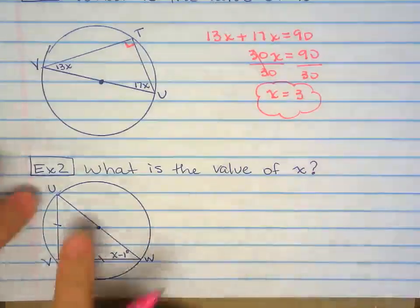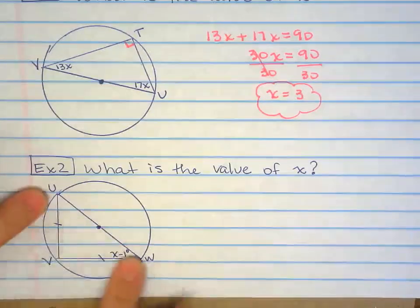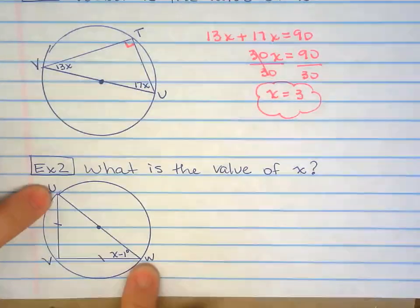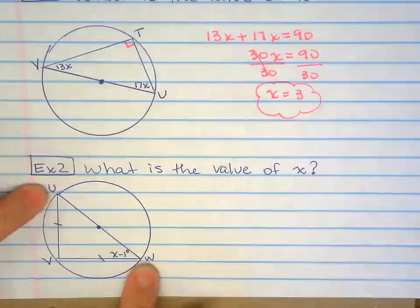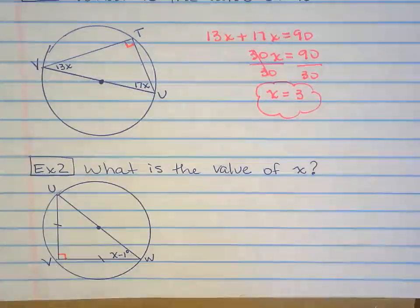So same idea. We're still looking for X. The line segment UW is the diameter. That means this angle right here is a 90 degree angle.